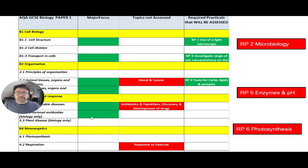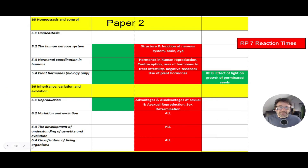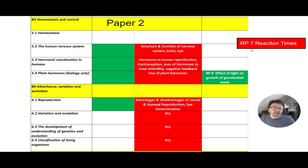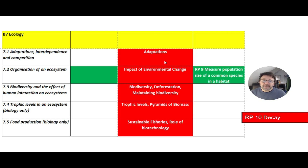Now paper two — all those things in red were not examined last year. Things like structure and function of the nervous system, the brain and the eye, hormones in human reproduction, contraception, uses of plant hormones, sexual and asexual reproduction. But in particular, things like variation, genetics, and classification — none of that came up last year — nor did the reaction timer required practical. Second half of paper two, the ecology — there was hardly any ecology last year in the paper.